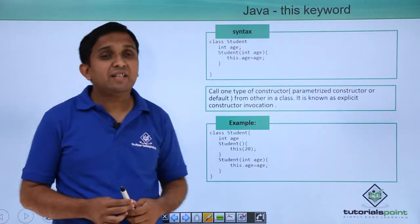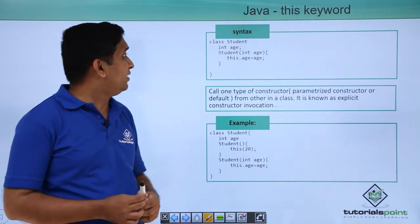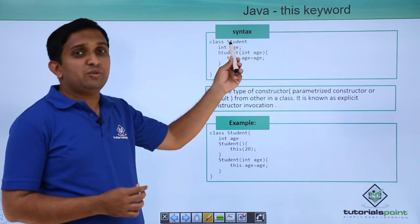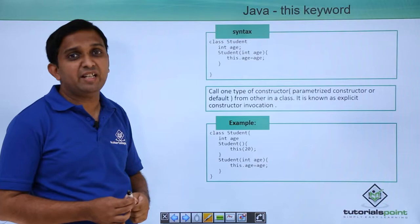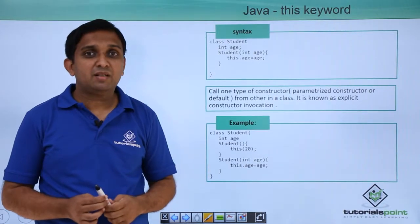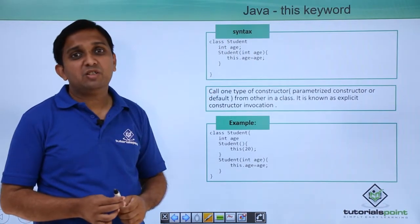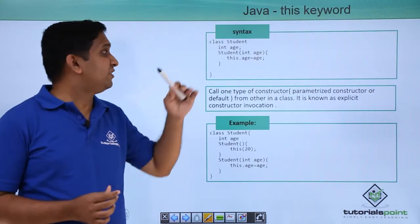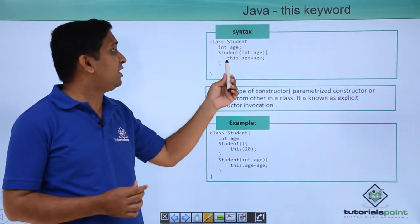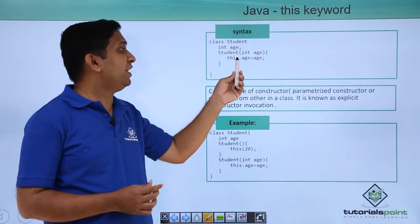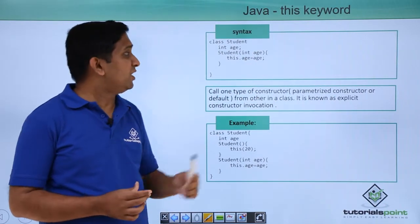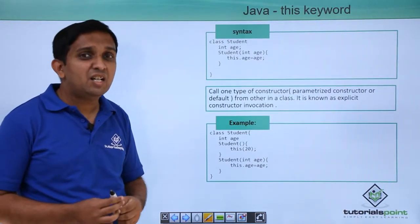So which are the cases where we need to use it explicitly? The first case is something like this: suppose there is one class Student. In the Student class you have one instance variable 'age', and inside the constructor you are also taking a parameter with the same name. So this is the instance variable and this is the local variable. In that case the instance variable gets shadowed by the local variable. So if you want to overcome that shadowing, you will write 'this.age = age'. When I say 'this.age' it is the instance variable, and when I write simply 'age' it is the local variable. So 'this' is used to overcome the shadowing of the local variable.